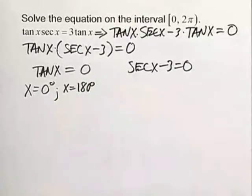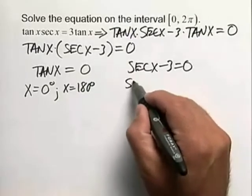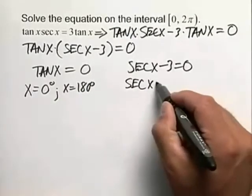Secant of x minus 3 equals 0, that's a little more involved. We need to solve for the secant of x. We know that the secant of x is equal to 3.